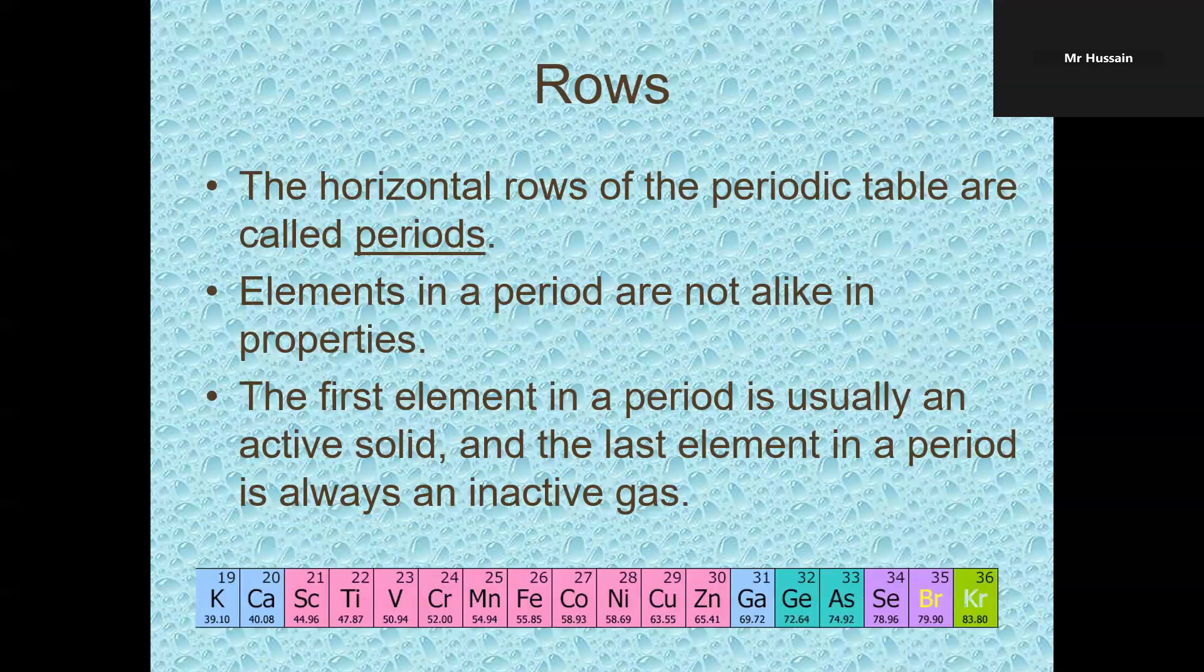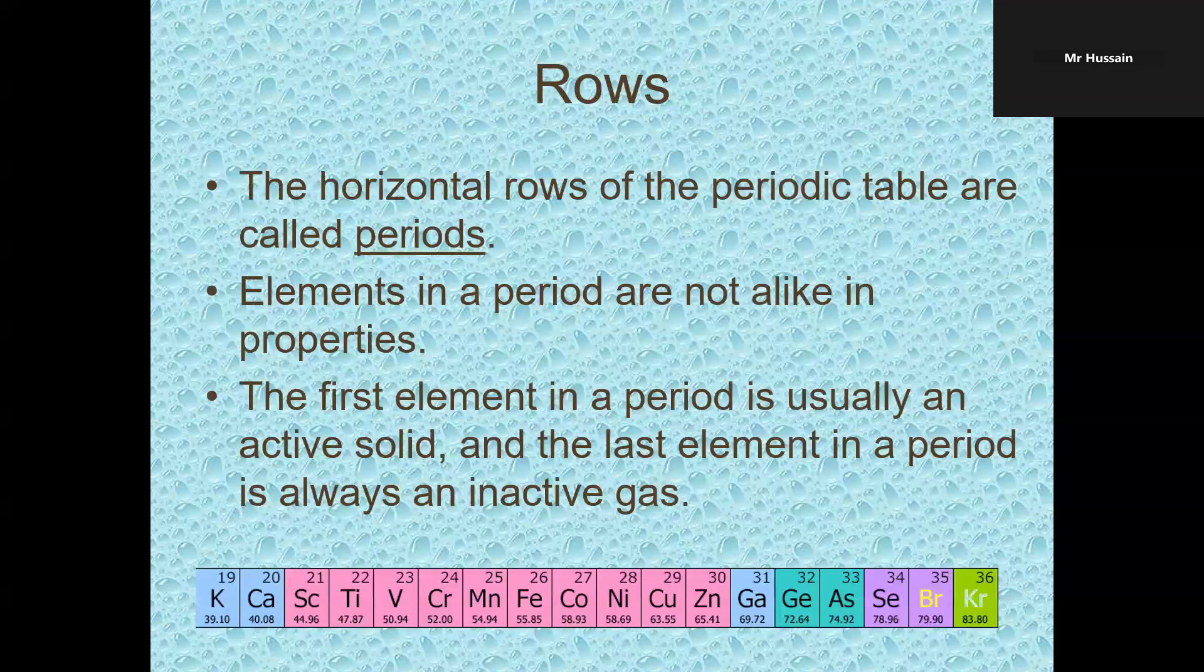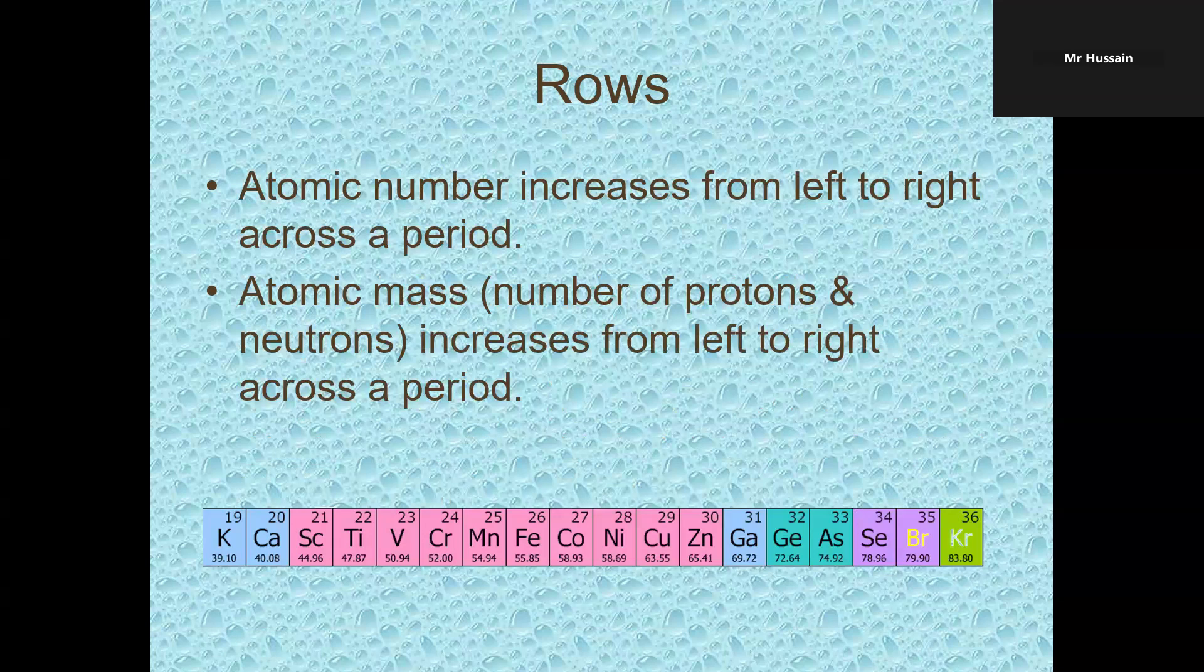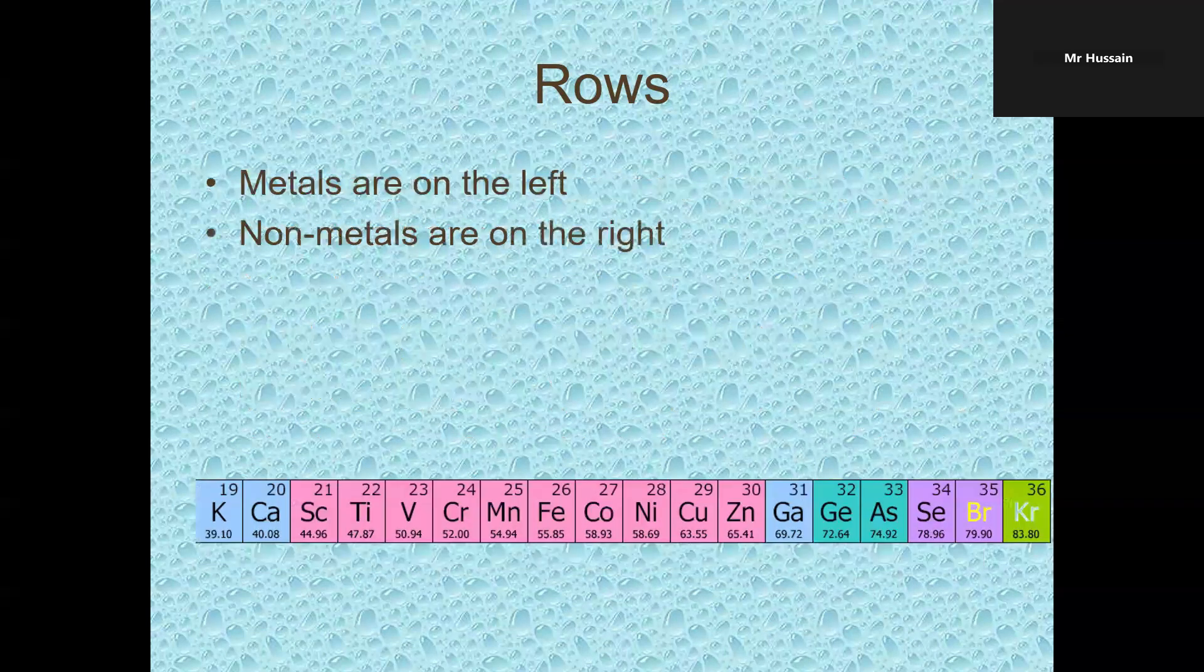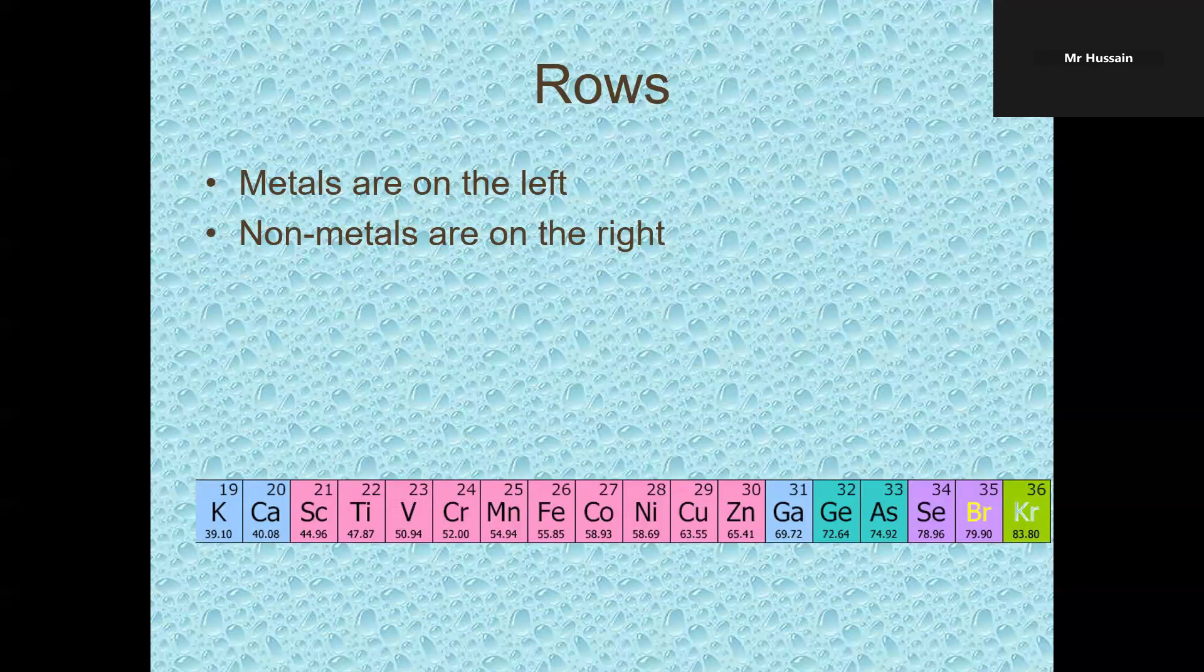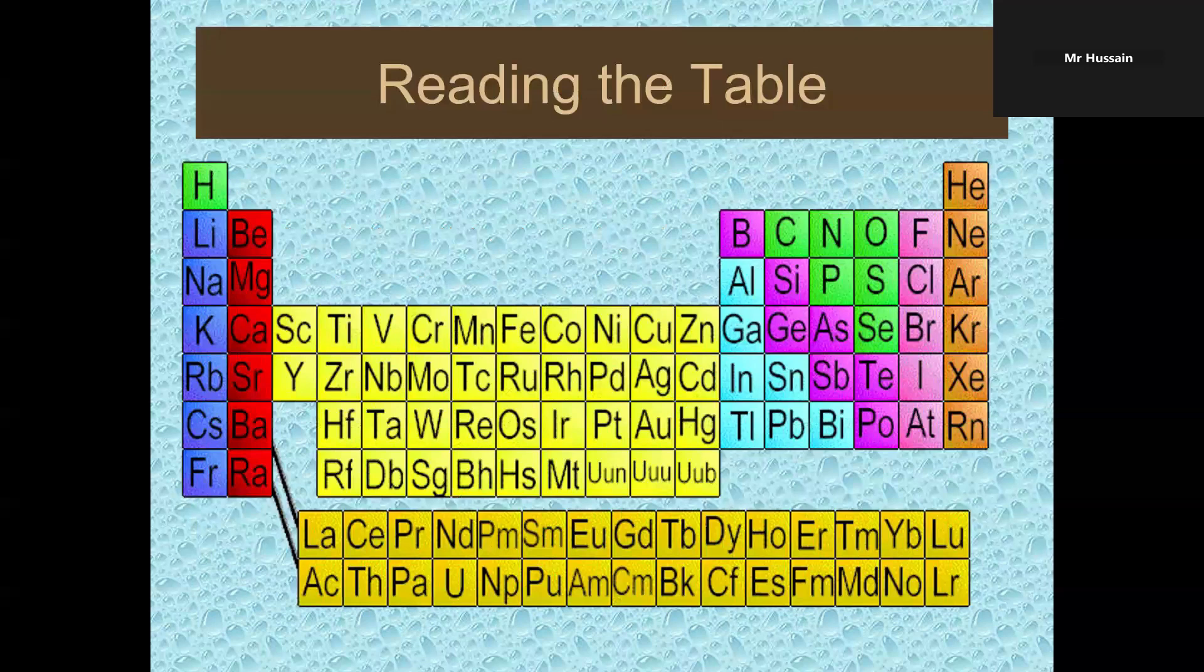Periods. You see left to right, and look at this row given on this slide. The number is 19, and as you move towards right, you see atomic number increasing. Elements in a period are not alike in properties. The first element in a period is generally a solid, and the last element in the period is always an inactive gas. Atomic number increases from left to right. Atomic mass also increases from left to right across a period. When you study rows or periods, you see metals are on the left side of the periodic table and non-metals are on the right side.